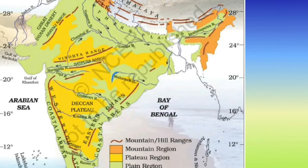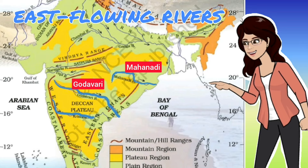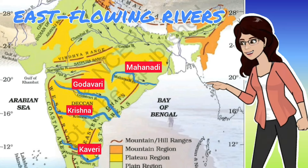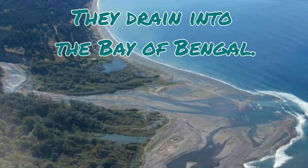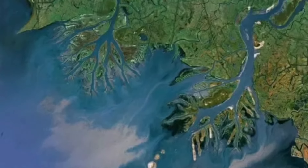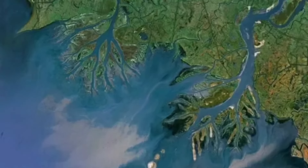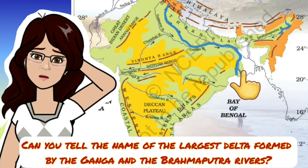We also have east-flowing rivers such as the Mahanadi, Godavari, Krishna and Kaveri, which drain into the Bay of Bengal. These rivers have formed fertile deltas at their mouths. The largest delta is formed by the Ganga and the Brahmaputra rivers.